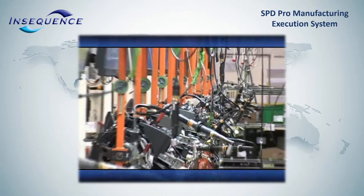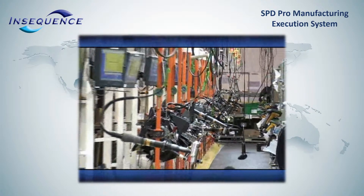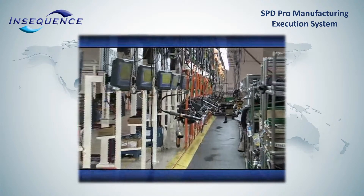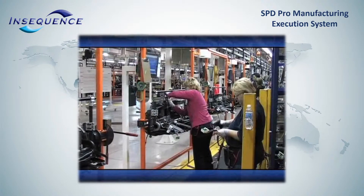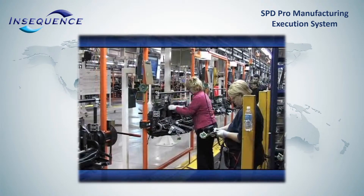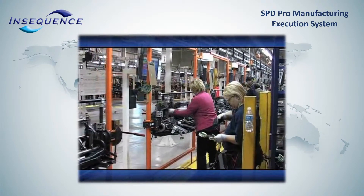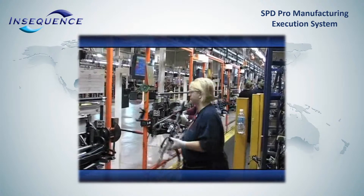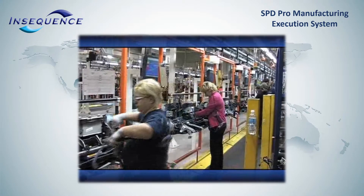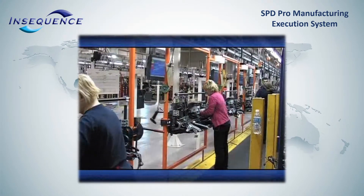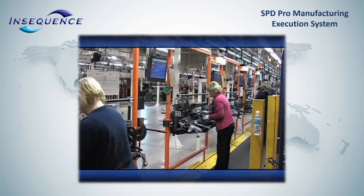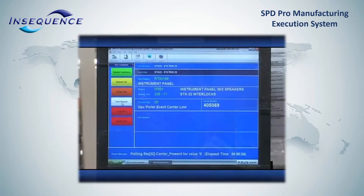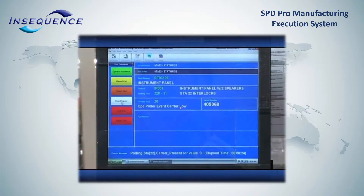Coordinating and synchronizing people, processes, equipment, and assemblies, MES software displays step-by-step instructions for operators at each workstation, error-proofs each step, interfaces with assembly line machinery as needed, and provides complete product genealogy.